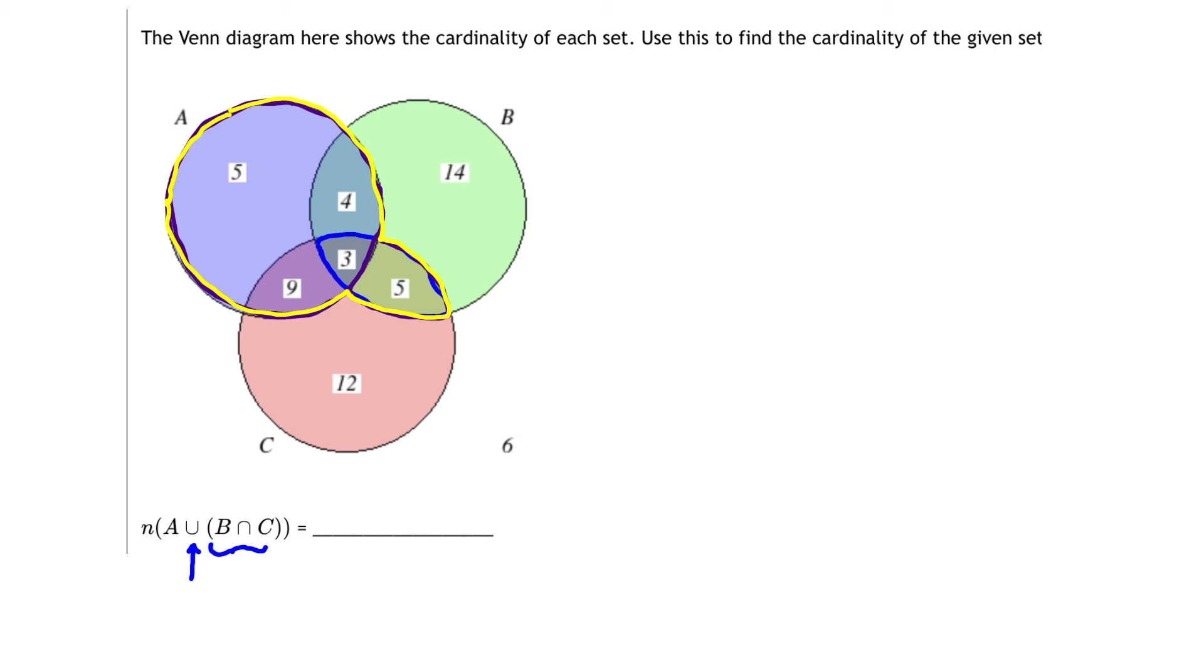So now we just count those elements. There are in this set 5 plus 9 plus 3 plus 4 plus 5. Or if we add those up, that gives us a total of 17 plus 9 or 26. So that tells me that the number of elements in A union B intersect C is 26.